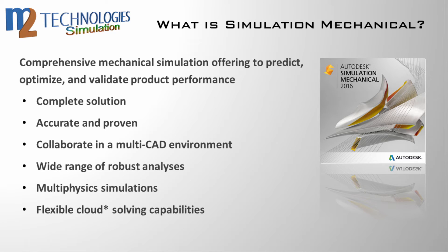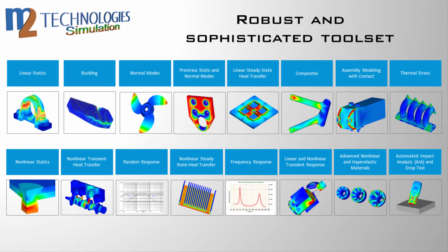Autodesk Simulation Mechanical Software, powered by Autodesk Nastran, helps you predict product performance, optimize designs, and validate product behavior before manufacturing. Users can utilize a highly accurate, industry-tested, general-purpose finite element solver to run comprehensive multi-physics simulations with other Autodesk products. Supporting multi-CAD environments, Simulation Mechanical provides flexibility in simulating CAD models in various formats. It supports a wide array of analysis types, from linear static stress and normal modes to advanced non-linear static and transient stress, dynamic response, and thermal analysis types.